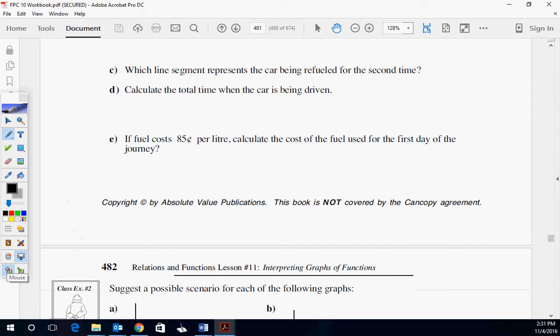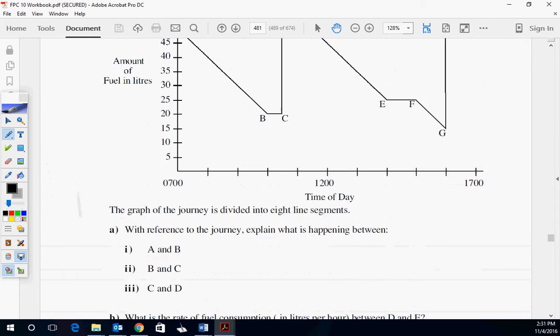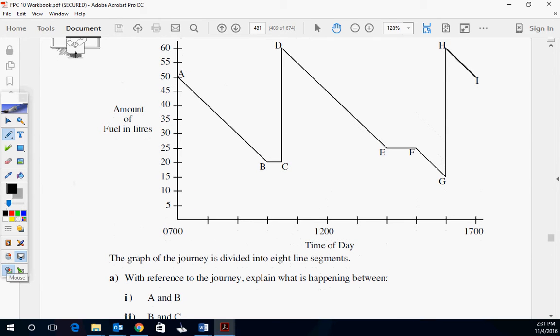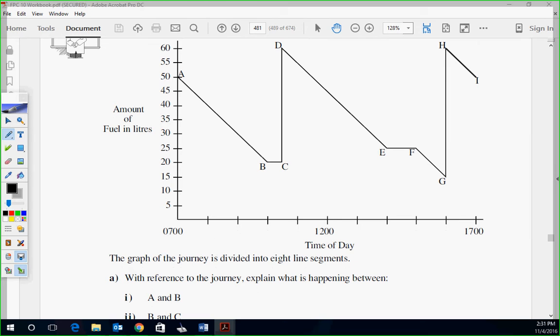If the fuel costs 85 cents per liter, calculate the cost of fuel used for the first day of the journey. So we need to figure out how much fuel they use every time it's going downward, right? Same thing here. From here, 50 to 20, they used 30 here, 30 liters. Didn't use any, got some. We don't have to do that because we're going to figure out how much they used. This is refueling, so we're not going to count this twice.